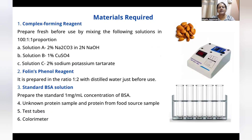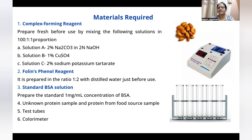The materials required to carry out the experiment are: the complex-forming reagent, which involves solution A, solution B, and solution C; Folin-phenol reagent prepared in a ratio of 1 to 2 well before use; a standard BSA solution of concentration 1 mg per ml; an unknown protein sample; a protein from food source — almond in this case; sufficient test tubes; and a colorimeter to measure the absorbance.